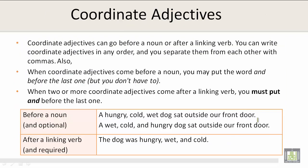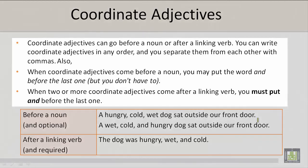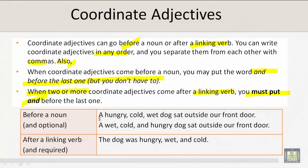Coordinate adjectives. Coordinate adjectives can go before a noun, after a noun, or after a linking verb. You can write coordinate adjectives in any order, and you separate them from each other with commas. When coordinate adjectives come before a noun, you may put the word 'and' before the last one, but you don't have to. When two or more coordinate adjectives come after a linking verb, you must put 'and' before the last one.